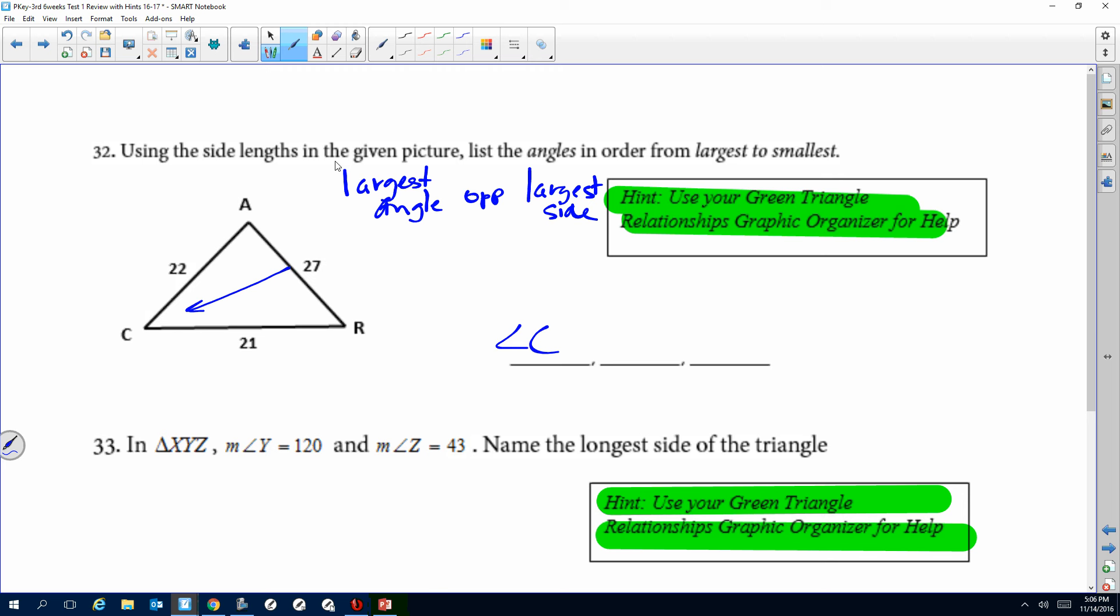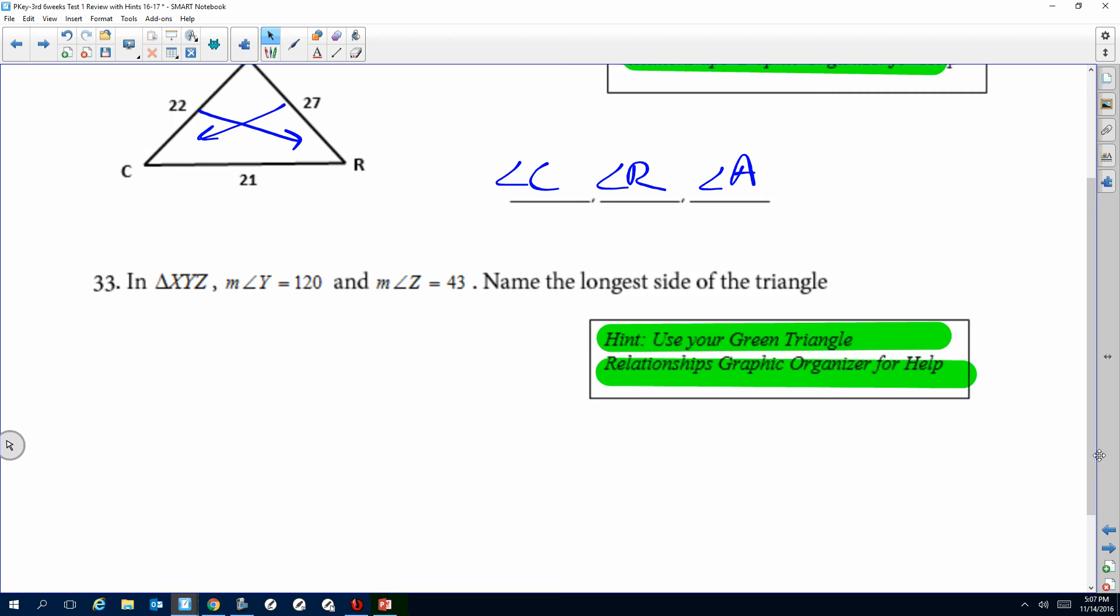And then the next largest is 22, we look opposite that is our angle R, and then our angle A. So remember vice versa, so if I give you the angle you can find the side. So like on this one there's an old picture but we can draw it. We know it's a triangle, triangle XYZ, doesn't have to be to scale.